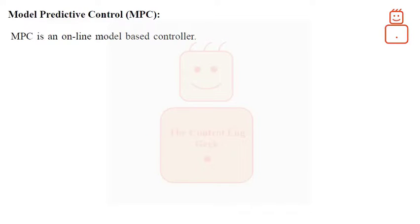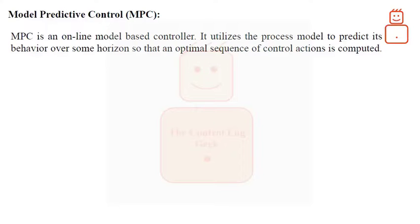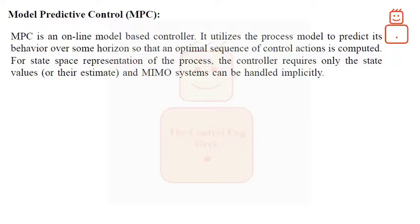MPC is an online model based controller. It utilizes the process model to predict its behavior over some horizon so that optimal control actions are computed. For state space representation of the process, the controller requires only the state values or their estimate and MIMO systems can be handled implicitly.